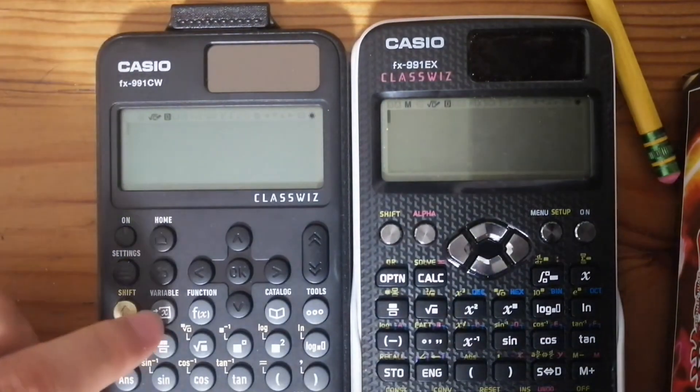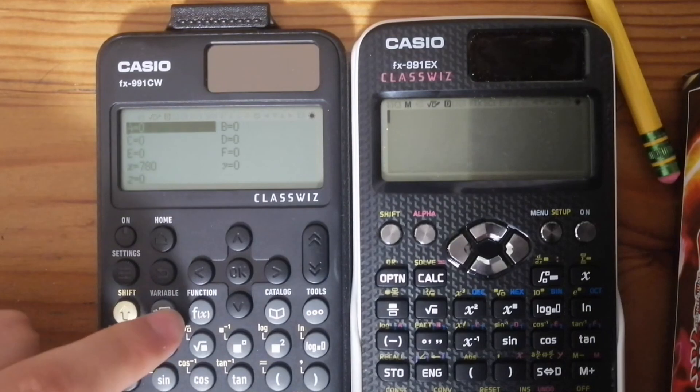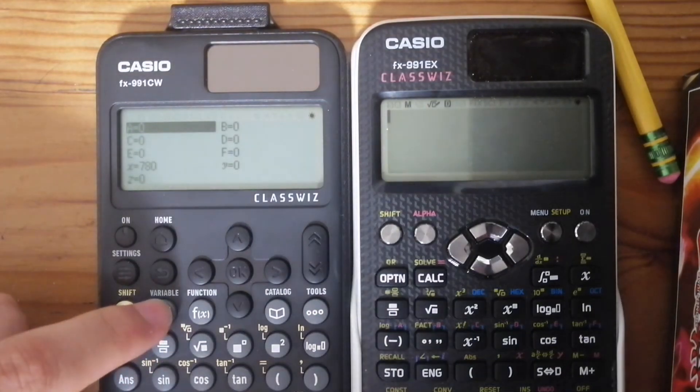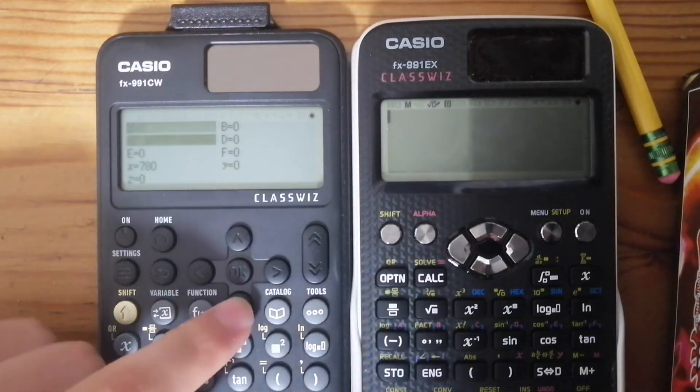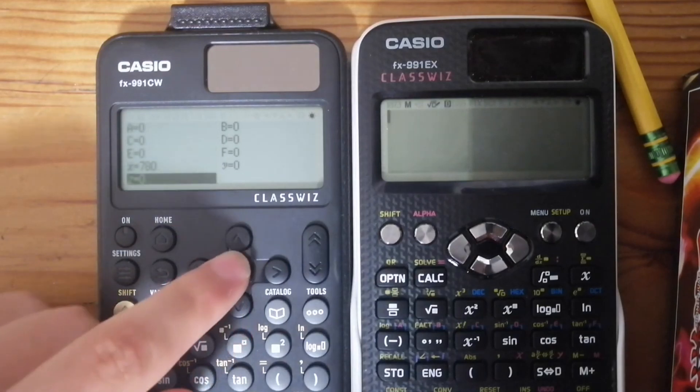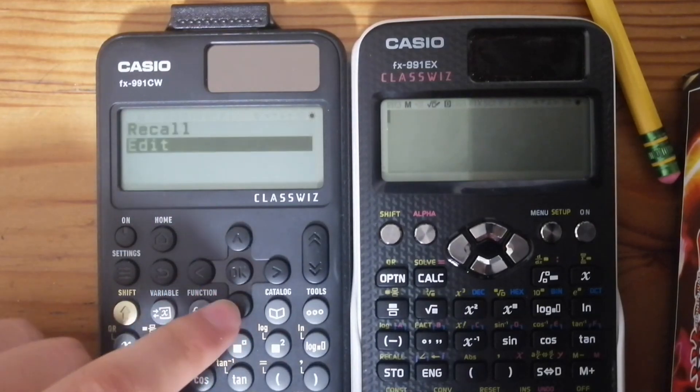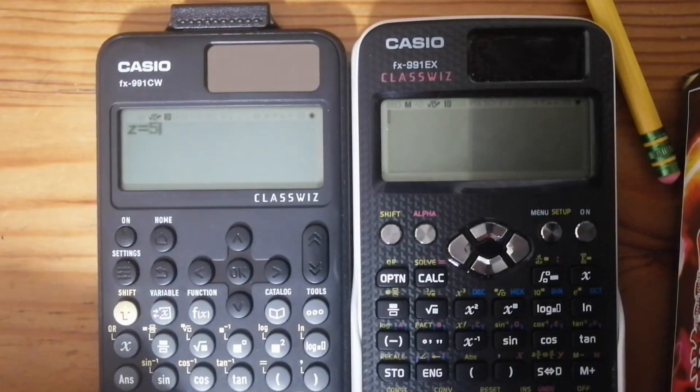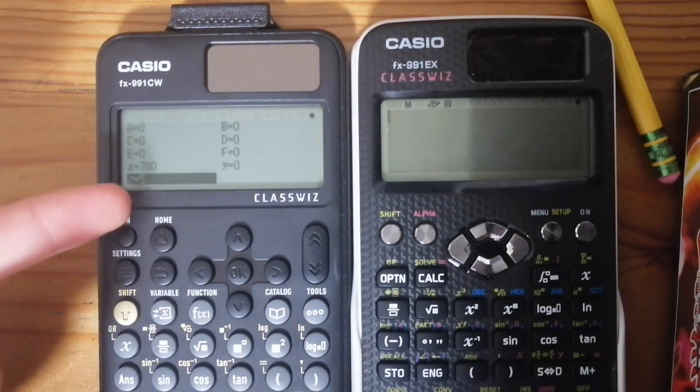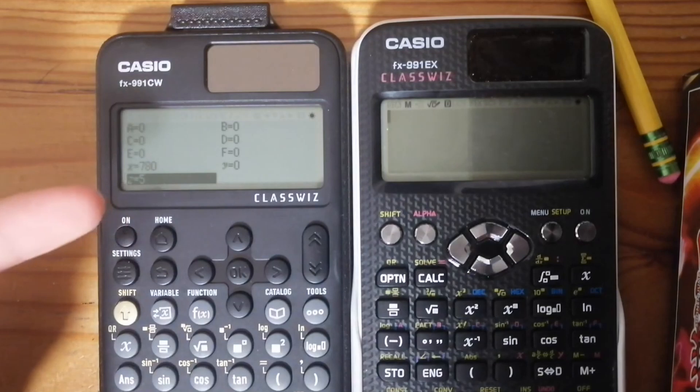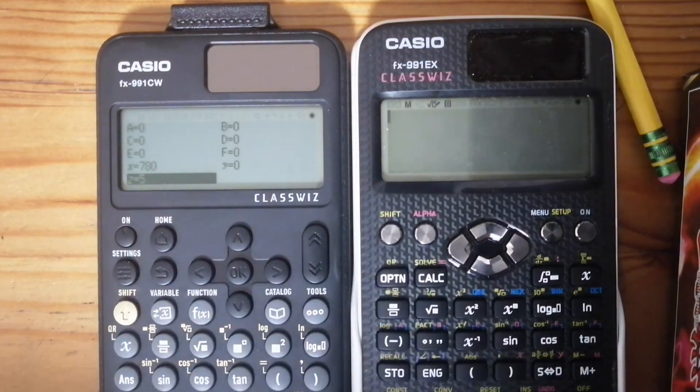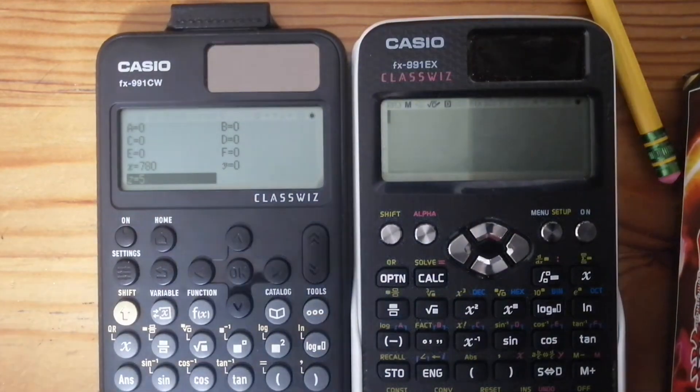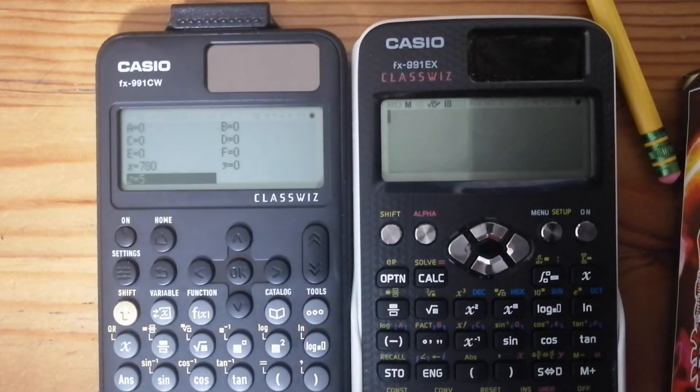So first of all, let's take a look at this new button over here called variable. So here, as you can see, I have nine different variables. I can set these to whatever. As you can see, I've already set the X variable to 780. Here, I can change the Z variable to something, let's say like 5. And now there's an actual screen for you to see what variable you've set each, what value you've set each variable to. Obviously, this is very useful. So you can actually see it.